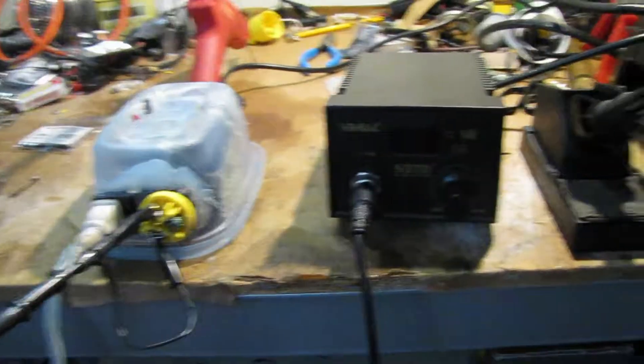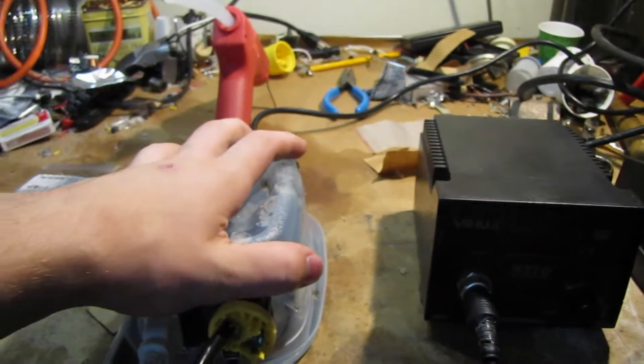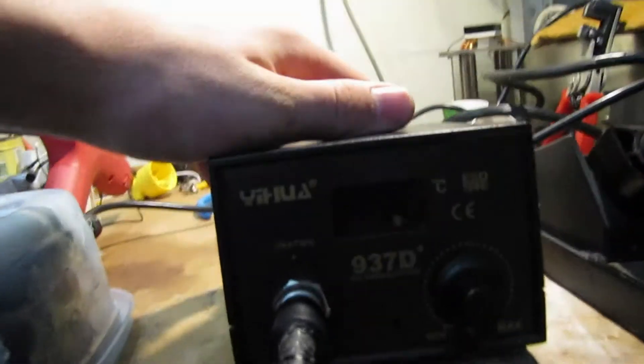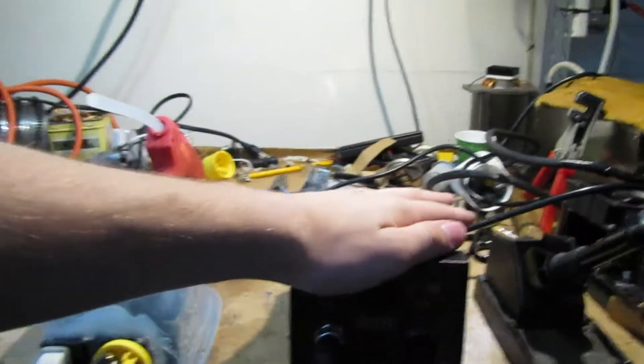Okay, here we have my different soldering tools. So on the left we have my homemade temperature control and on the right we have the Yehua 937 D plus variable temperature soldering station. Now the key difference between these is that